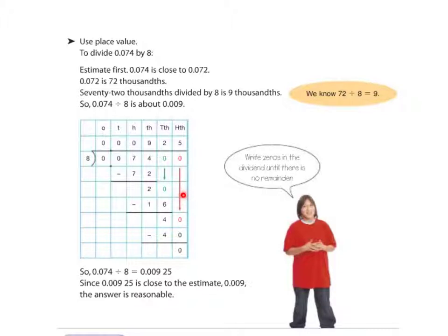8 goes into 20 approximately how many times? 2 times. 8 times 2 is 16. I'm going to subtract. I'm going to end up with 4. I still have a remainder. I need to add another 0. Add that 0. 8 goes into 40 now. How many times? Well, 5 times. 5 times 8 is 40. I have no remainder. Now, this is where placing your decimal can be tricky if you haven't lined up your numbers correctly. If you've lined them up correctly, not a problem. If you've written all those 0s in, not a problem. And you just bring your decimal up. 0.00925.